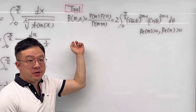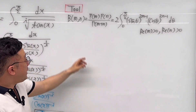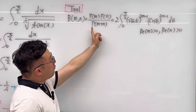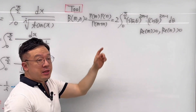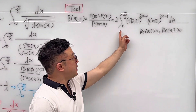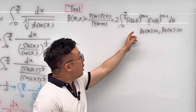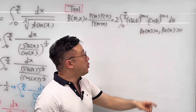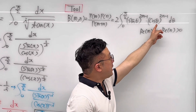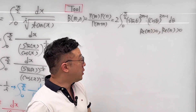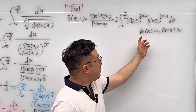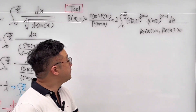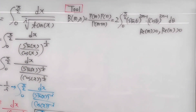Here's the tool for the beta function. The beta of m and n equals gamma of m times gamma of n over gamma of m plus n, and this can be represented as two times the integral from zero to pi over two of sine theta to the power of two m minus one, times cosine theta to the power of two n minus one, d theta, where the real parts of m and n are both greater than zero. Using this, let's look at our integral.